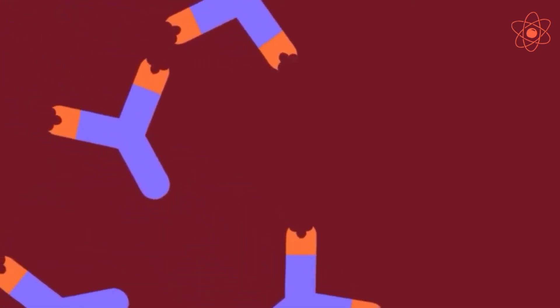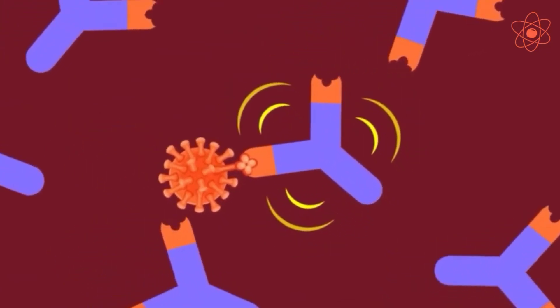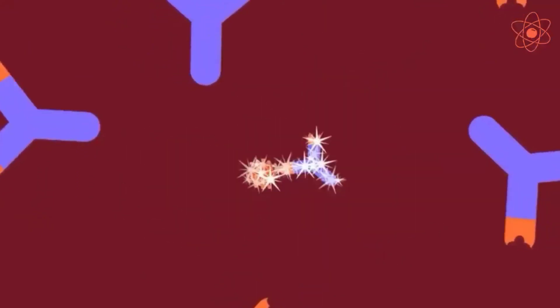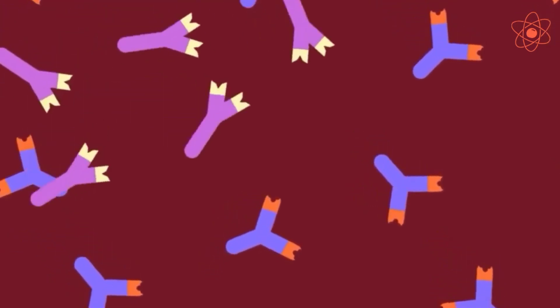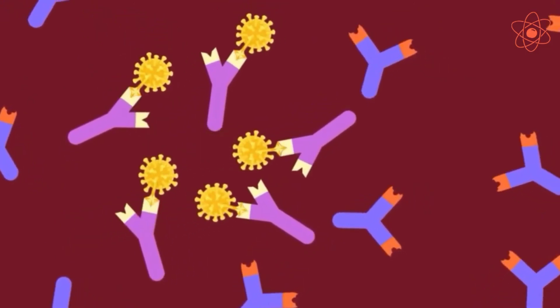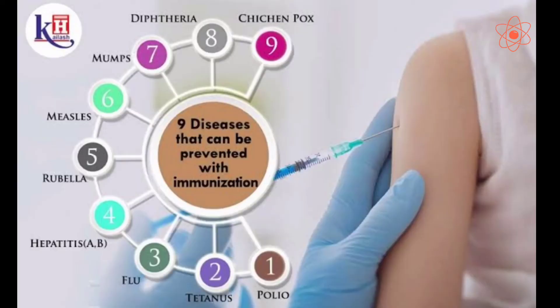These antibodies remain in the body for a very long time and fight against the same microorganisms and kill them if they happen to enter the body naturally at a later date. So, due to the presence of antibodies, a person remains protected from that particular disease. In this way, a vaccine develops immunity from a disease.